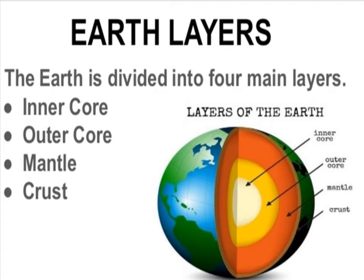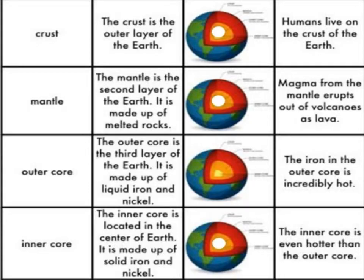Some of these layers have even more layers inside them and are always moving. The crust is the outer layer of the Earth in which humans live. The mantle is the second layer, made up of melted rocks. Magma from the mantle erupts out of volcanoes as lava. The outer core is the third layer.